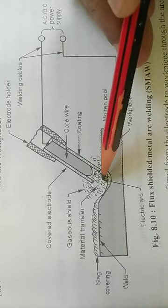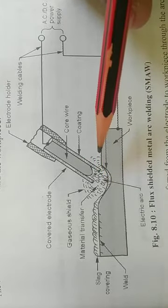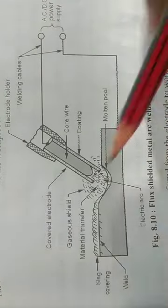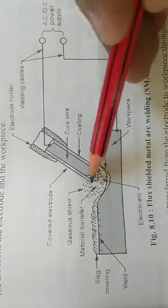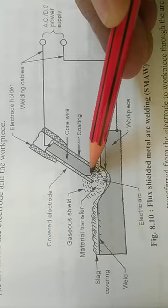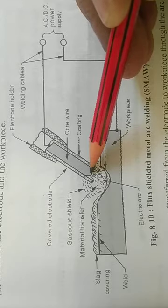The coating of flux melts at a comparatively lower rate in comparison to the electrode wire.